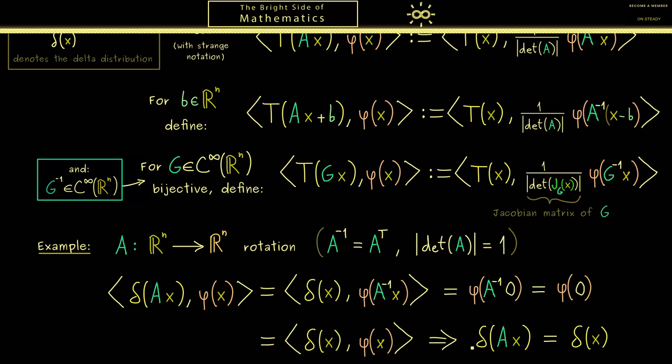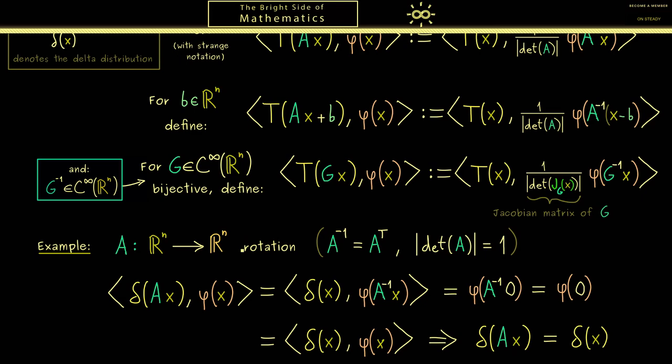And now because this holds for all test functions, we see delta_x is the same as delta_(Ax). More precisely, saying it in the correct way, the two distributions are the same. Now because this holds for every rotation, we can say that the delta distribution is invariant under rotations. So you see this is an important property a distribution can have.